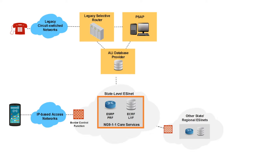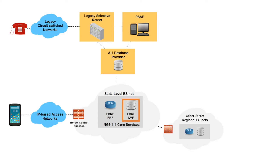The Emergency Services Routing Proxy, or ESRP, provides policy-based call routing capabilities that replace the traditional selective router functionality and allows for fine-grained control of how emergency calls are routed to PSAPs. The Emergency Call Routing Function, or ECRF, replaces the tabular selective router database, MSAG, and ALI capabilities with a GIS-backed data store that routes emergency calls using the geospatial coordinates of the caller's location instead of a telephone number.